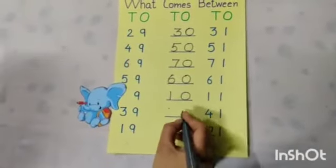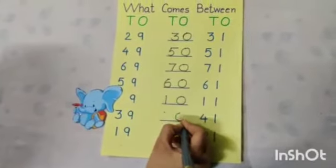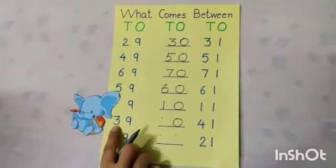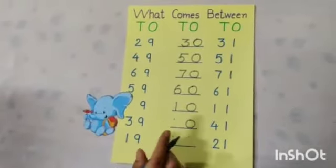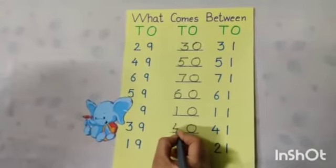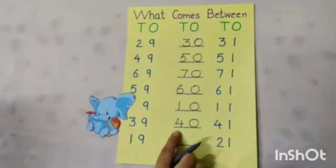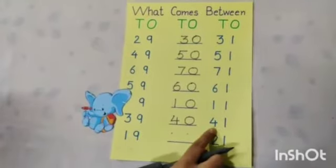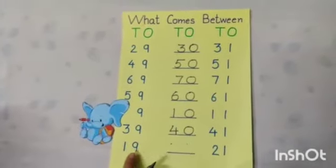Next number is 39 between 41. So, here will come 0, and here tell me fast. Very good. Next number is 4. So, 4, 0, 40 comes between 39 to 41.